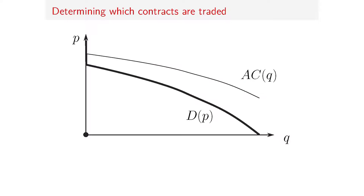If there were no adverse selection and constant returns to scale, the average cost of covering people would just be some constant. But if there's adverse selection, the average cost curve is downward sloping, because the more people that buy, the people with the lowest willingness to pay are actually cheaper to cover. In some cases the average cost curve is always higher than the demand curve, meaning whatever price you set, the set of people who show up will be more expensive to cover than the price. Even if you could have some welfare-enhancing transactions, no one's going to do any trades—this is what Akerlof would call complete unraveling of the market.